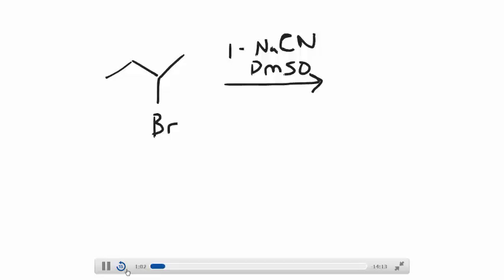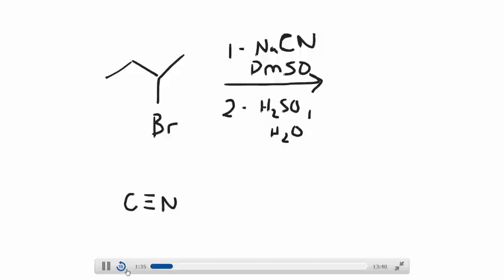Once you have the nitrile, you need to convert it into the carboxylic acid, and this is done with an oxyacid in water. To get this reaction to move toward the product, you would have some of this oxyacid in water — those are the conditions needed. For the first step, you have your cyanide. The sodium is a spectator ion.